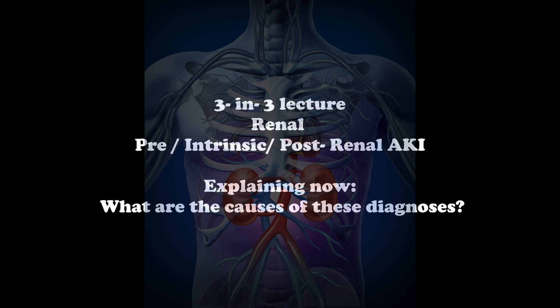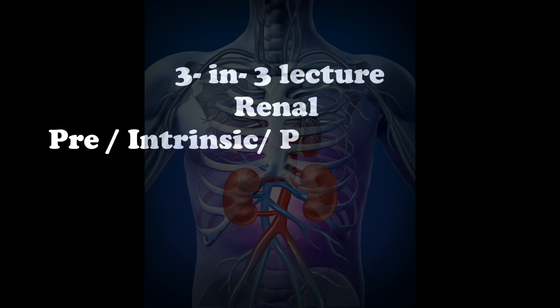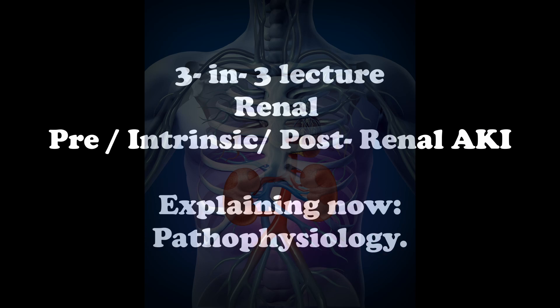In pre-renal pathophysiology, decreased blood supply to the kidneys causes loss of glomerular filtration rate. The body activates the renin-angiotensin system, increasing absorption of sodium and water. This raises urine osmolality, and the body responds by increasing antidiuretic hormone, resulting in increased reabsorption of water and urea. In the blood, this is reflected as an increased BUN-to-creatinine ratio.